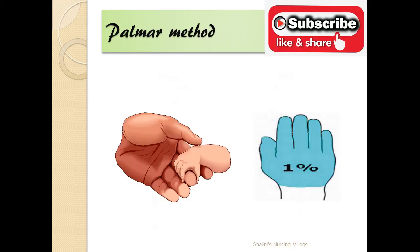The palmar method is a rough way of estimating total burnt surface area, where the palm of the affected victim including the fingers is considered as one percent. However, calculating burns using this method is very difficult when the patient is critically ill.